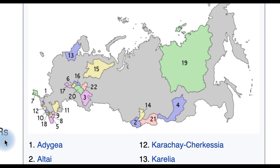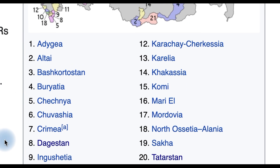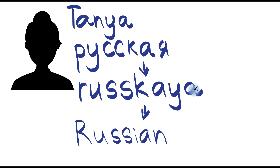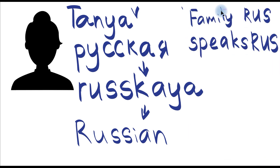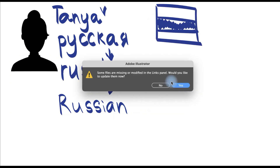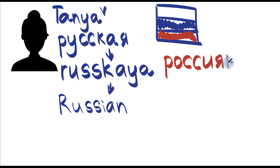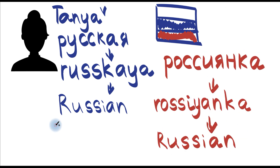A lot of regions in Russia have their own ethnicity. For example, I am русская — it means that my ethnicity is Russian. I have a Russian name, Tatiana, and my family speaks Russian. I'm also from Russia, so I'm Russian. And in English, it's translated again as Russian. So I'm Russian, Russian.